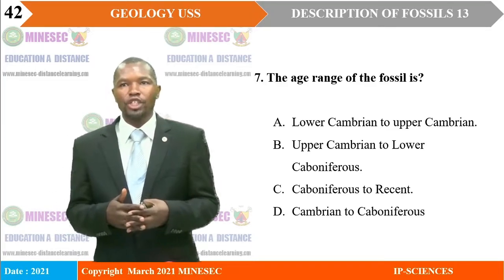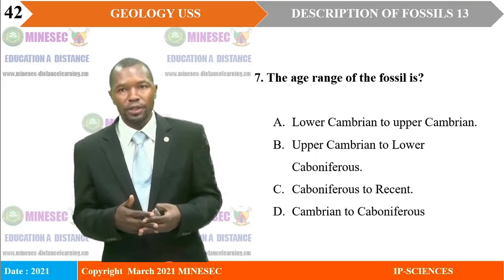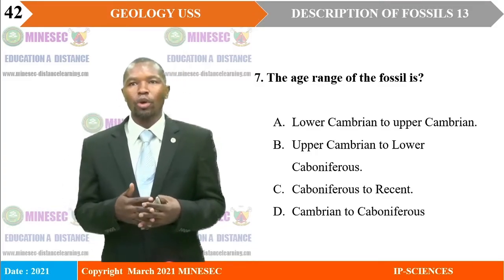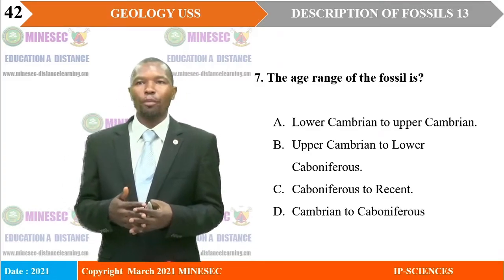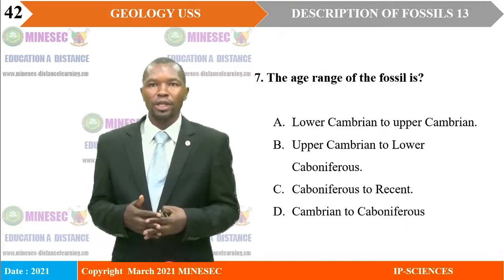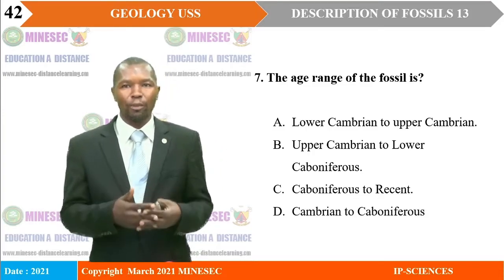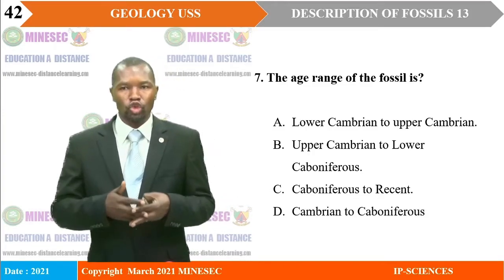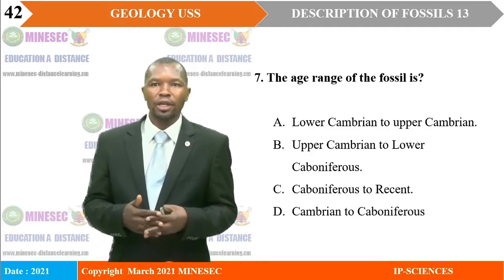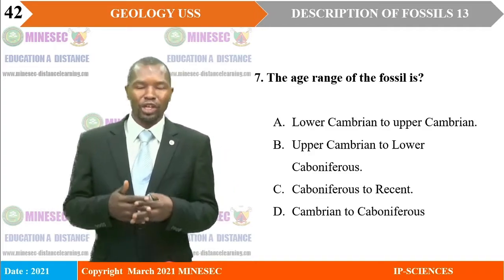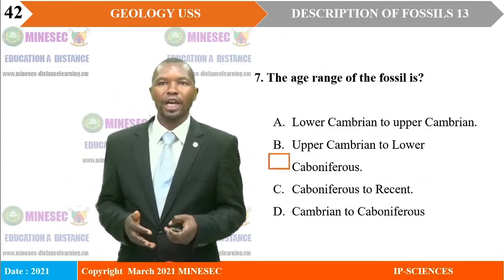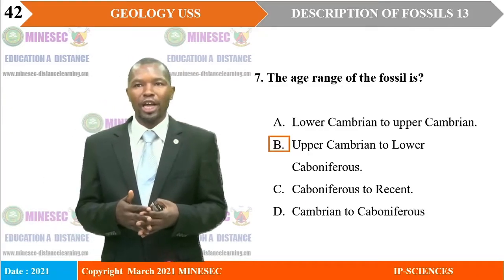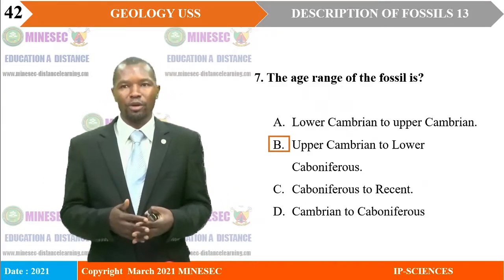Number 7: The age range of the fossil is. A: Lower Cambrian to Upper Cambrian. B: Upper Cambrian to Lower Carboniferous. C: Carboniferous to recent. D: Cambrian to Carboniferous. The correct answer is B — Upper Cambrian to Lower Carboniferous.